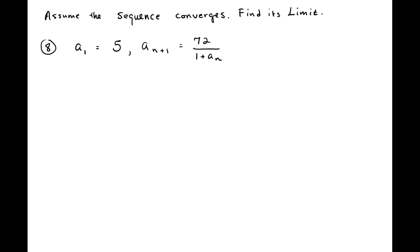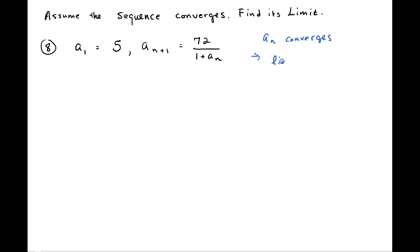We are given an initial element and then a recursion formula in this example, and we assume that this sequence converges and find its limit. We are going to make a couple of assumptions: the first assumption is that a sub n, some sequence here, converges, because they tell us it converges. The next thing is, if it converges, then it must settle on some limit. So we say the limit as n goes to infinity for this sequence is going to be some number L.